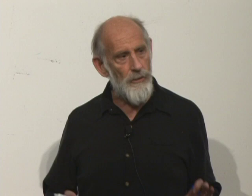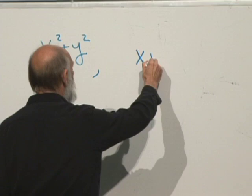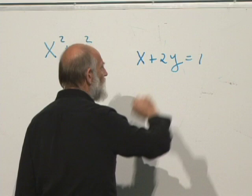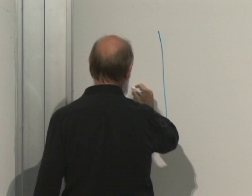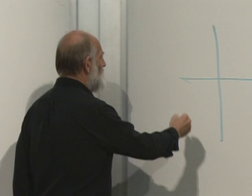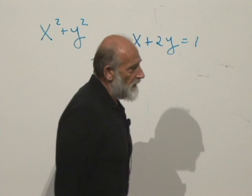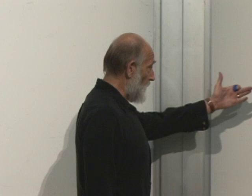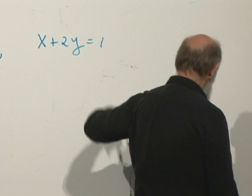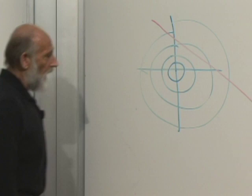Now suppose I tell you I want to minimize x squared plus y squared subject to a constraint: x plus 2y is equal to one. We can plot on the plane the contours of x squared plus y squared like a contour map. Right at the center it's minimized and as we move away it forms a bowl. The constraint x plus 2y equals one is a straight line, maybe looking something like this.